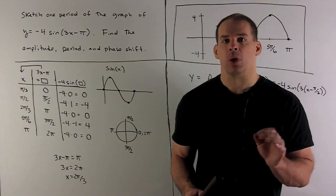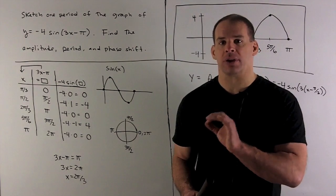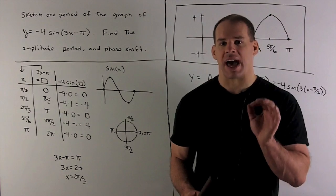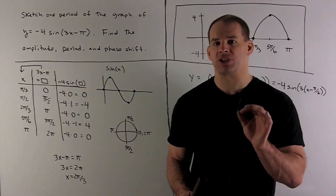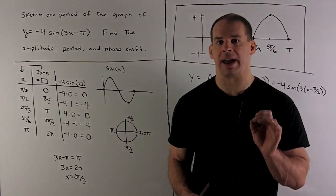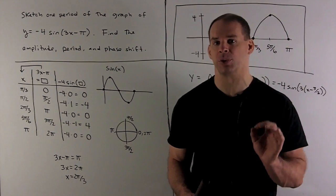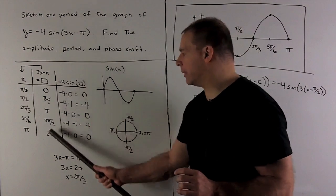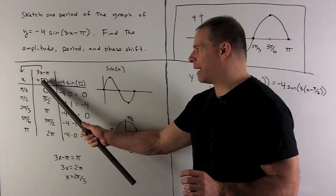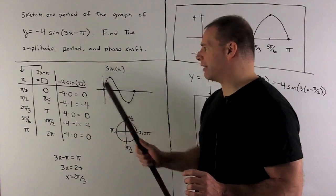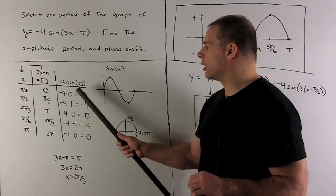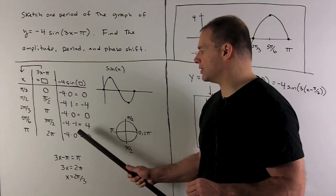We just went through all the good values for sine. We're going to consider sine of box, where box is just going to be all of our good values for sine: 0, pi halves, pi, 3 pi halves, 2 pi. Put them in the middle. Then we're going to have minus 4 sine of box. We already know all the good values — those are 0, 1, 0, minus 1, 0.